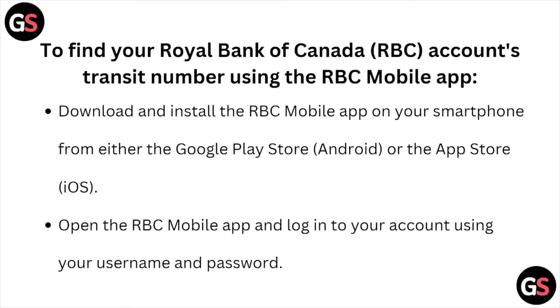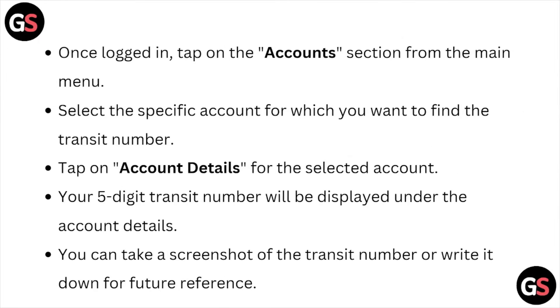Open the RBC mobile app and log into the account using your username and password. Once logged in, tap on the account section from the main menu and select the specific account for which you want to find the transit number.